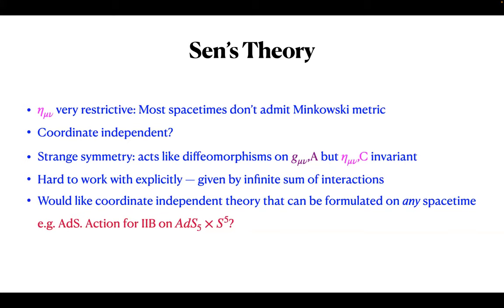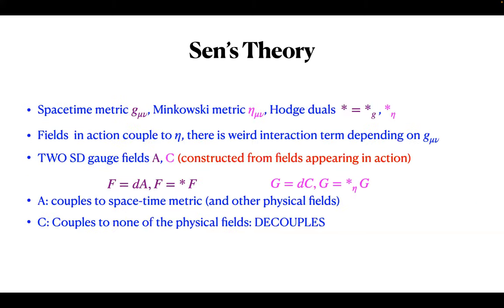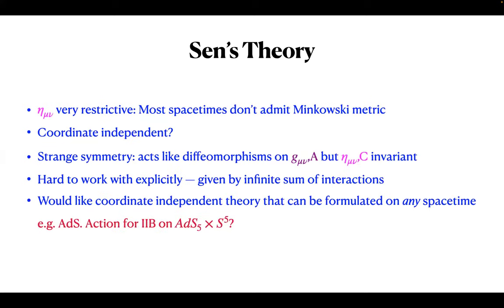If you look at the details in Sen's paper, the weird interaction term involving G is given by an infinite sum of interactions—he presents an action as a solution in terms of a power series. What one would like is a coordinate-independent theory that could be formulated on any spacetime. For example, one would be interested in constructing an action that would work on anti-de Sitter space, such as for type IIB supergravity on ADS5 cross S5, which includes a four-form gauge field with self-dual field strength.